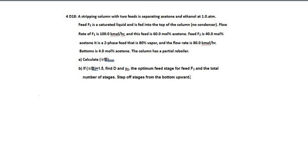A stripping column with two feeds is separating acetone and ethanol at one atmosphere. Feed F1 is a saturated liquid and is fed into the top of the column with no condenser. Flow rate of F1 is 100 kilomoles per hour and the feed is 6 mole percent acetone.